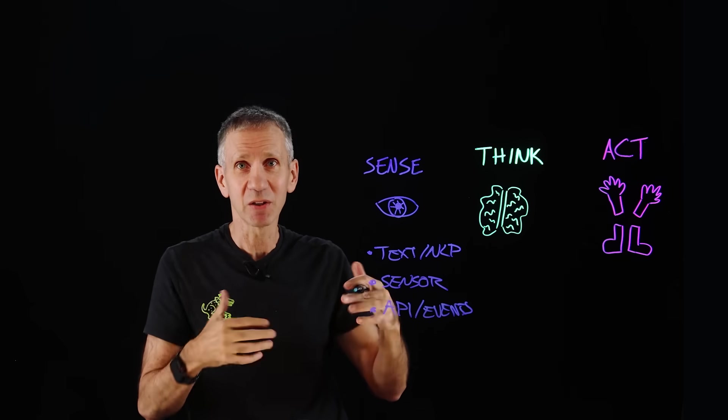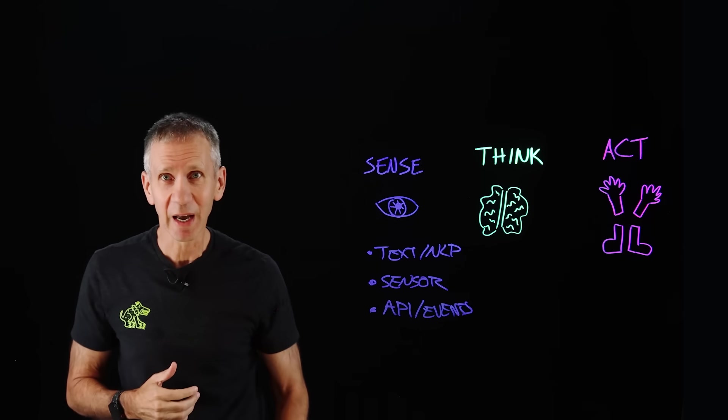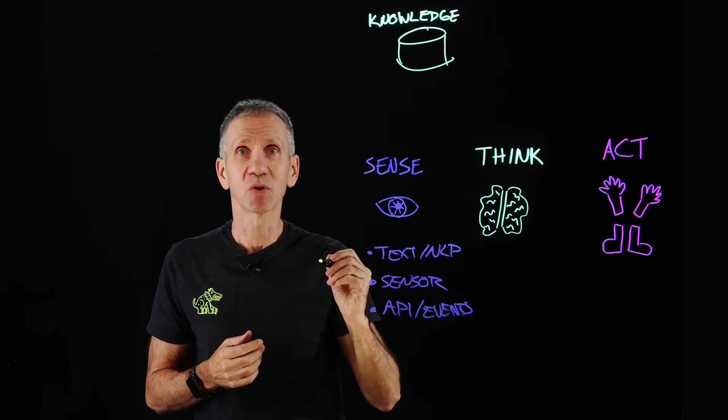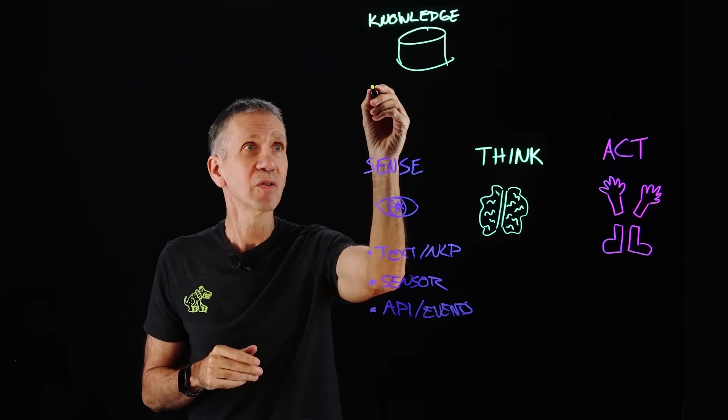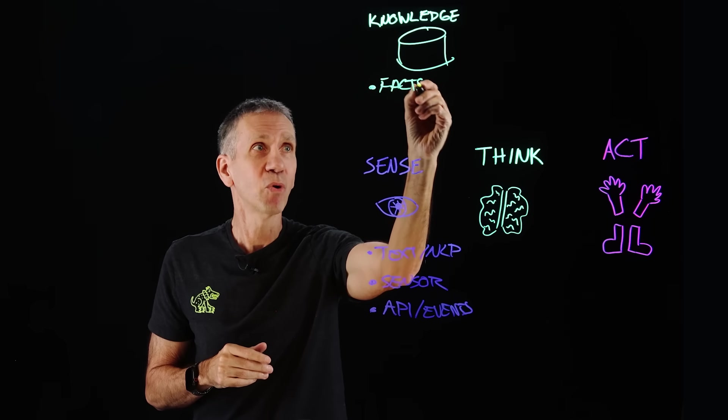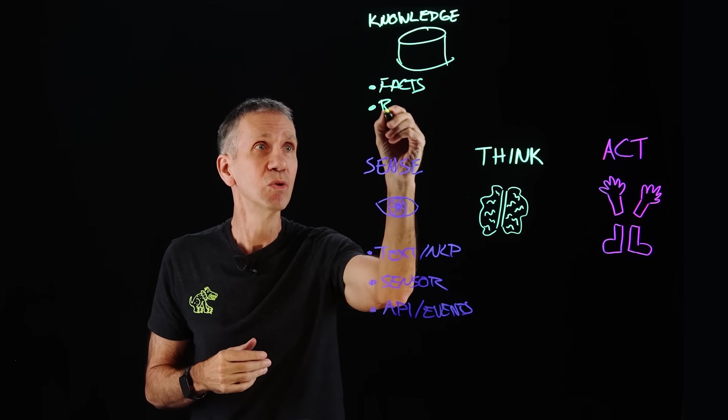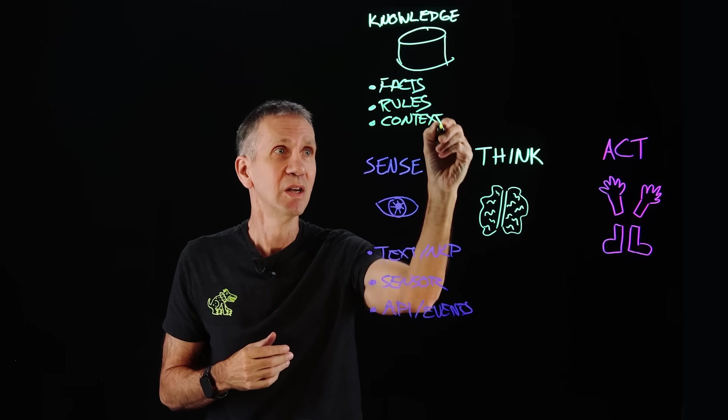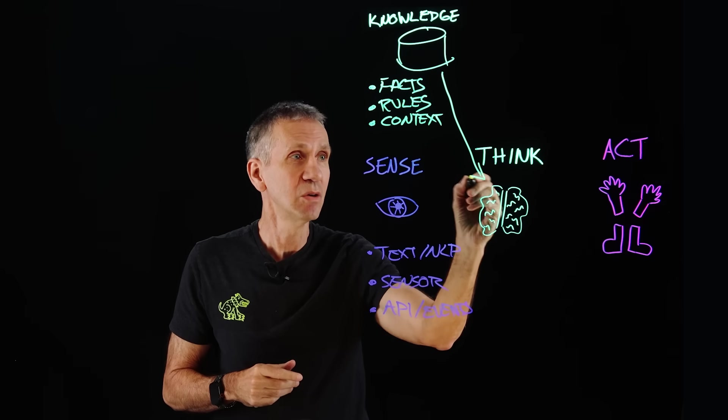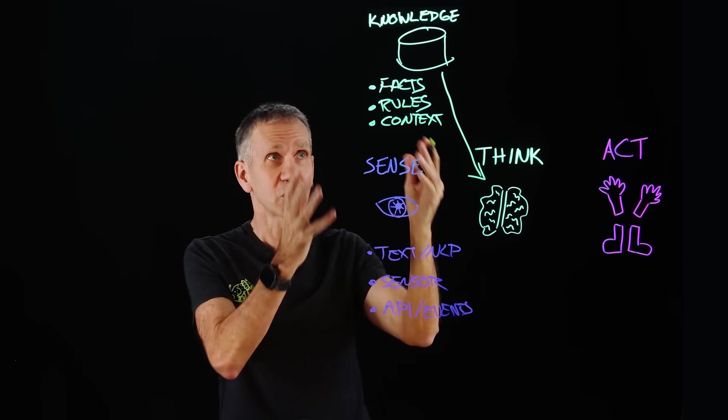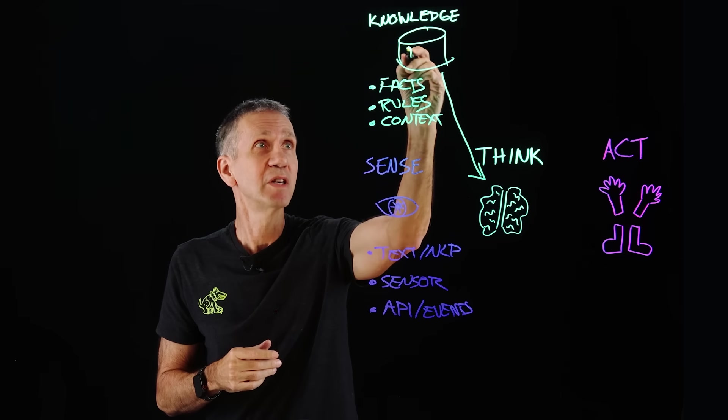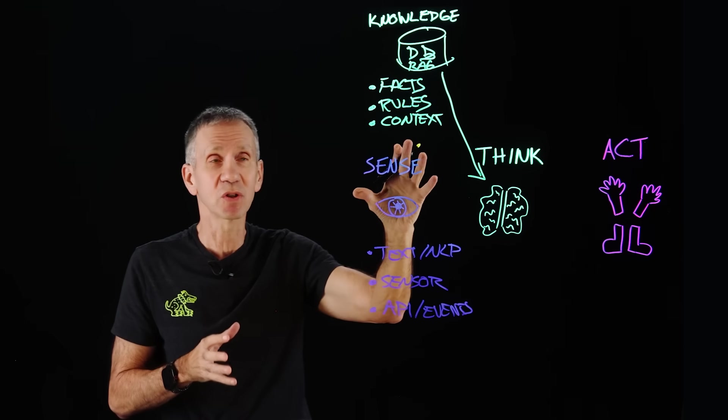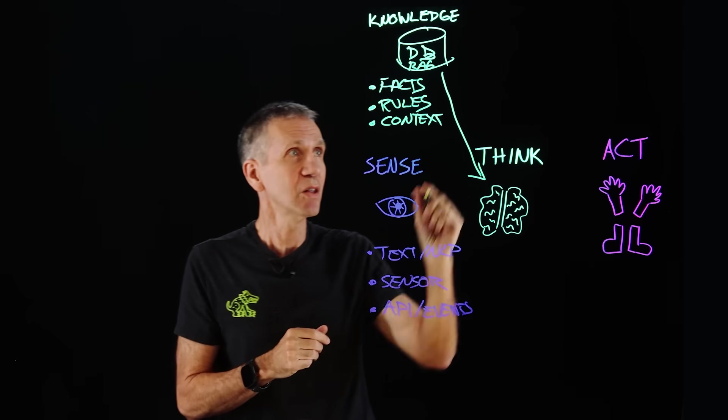Then it moves over to a thinking stage. How do I process all of this? It turns out in doing that, I need some more context. So one of the things I'm going to add to this system is a knowledge base of some sort. In that knowledge base, I'm going to store things like facts, things that are important to this system that it needs to know, rules that it needs to operate with. It could also have some other information that gives it context. These could come from a database, from a RAG source or retrieval augmented generation source. So there could be a lot of different sources for this knowledge coming into the system.